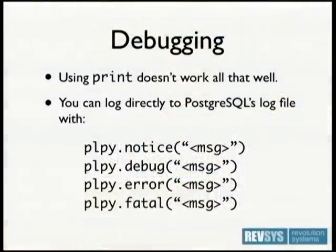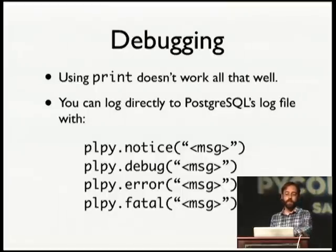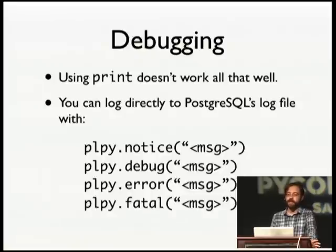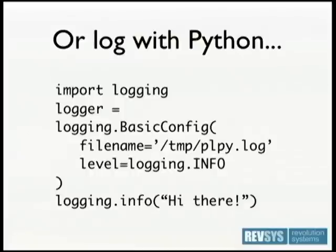One of the hardest things about working with stored procedures is debugging them. Using a print statement really doesn't work unless you're in the terminal where you started the Postgres server itself. With the special 'plpy' namespace included in all your stored procedures, you can access Postgres's log directly — notice messages, debug messages, errors, and fatals. Errors and fatals will actually stop the transaction. You can also use plain old Python logging since it's an untrusted language, but you'd have to abstract it across all your stored procedures, which gets cumbersome.